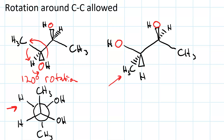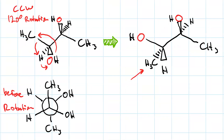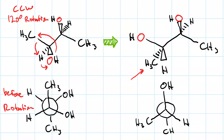What about looking from the same angle at the rotated structure? Pause your video and draw it. So our front carbon still looks like this, but now the hydroxyl is going up, the methyl is now on a dash so it's going to be on the left, and the hydrogen is going to be on the right. Our back carbon looks the same as it initially did, with the methyl going down, the hydroxyl going up and to the right, and the hydrogen going up and to the left. This is the Newman projection after the rotation.